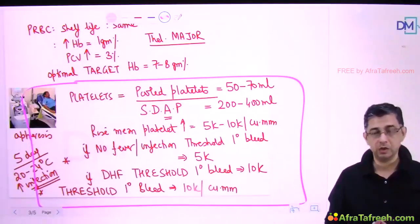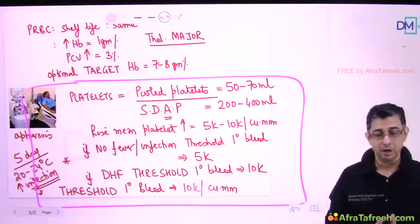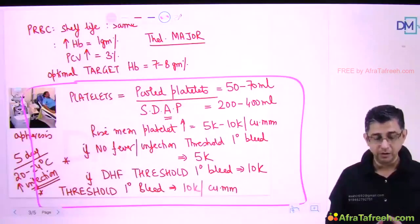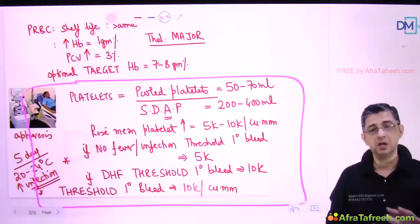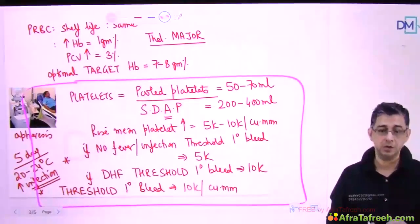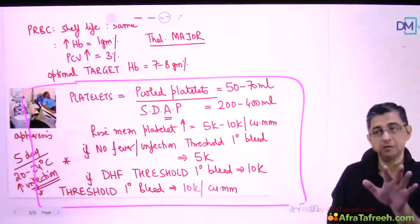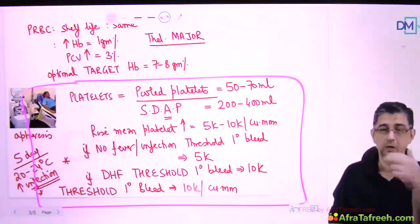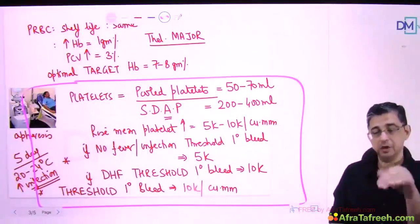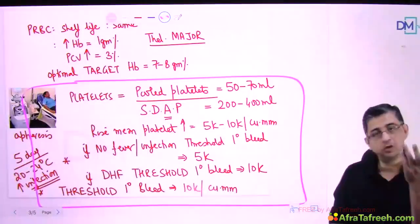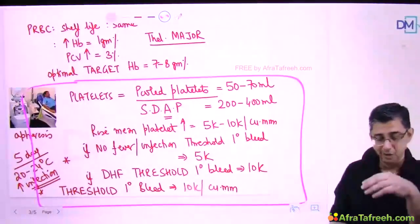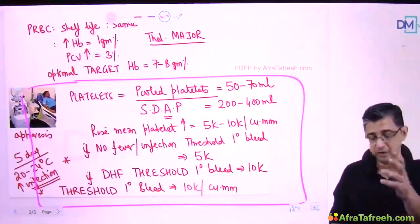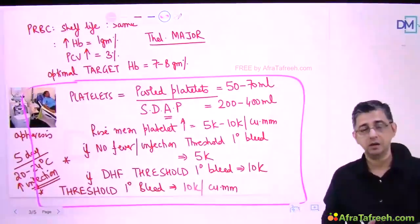If a person is having life-threatening bleeding, the first thing to give is packed RBCs - they control the metabolic acidosis, hypoxia, and hypothermia components. Using an inline warmer ensures hemoglobin values are normalized first because oxygen delivery is of primary importance. So if a question mentions a bleeding patient, do not straight away answer platelets. In dengue hemorrhagic fever platelets are appropriate, but for life-threatening bleeding like esophageal varices or peptic ulcer, the first objective is to stabilize hemoglobin with packed RBCs. This concludes the lecture on blood components.